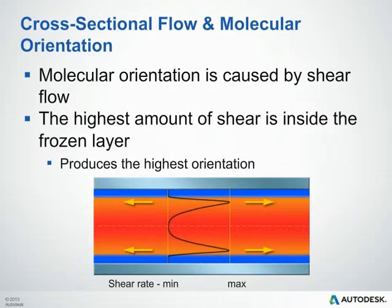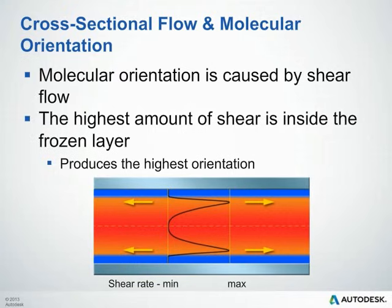Cross-sectional flow and molecular orientation: molecular orientation is caused by shear flow. With laminar flow, shear is captured by the difference in velocity between different layers. The highest amount of shear is typically just inside the frozen layer — the frozen layer is solidified and not moving, while the material just inside is flowing at much higher velocity. That velocity difference produces the highest orientation as well as the highest shear rates, as shown in the graph.